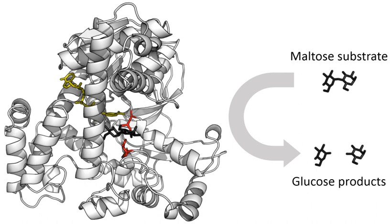To explain the observed specificity of enzymes, in 1894 Emile Fischer proposed that both the enzyme and the substrate possess specific complementary geometric shapes that fit exactly into one another. This is often referred to as the lock and key model. This early model explains enzyme specificity, but fails to explain the stabilization of the transition state that enzymes achieve.